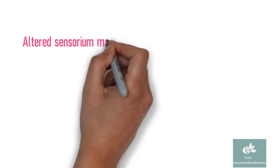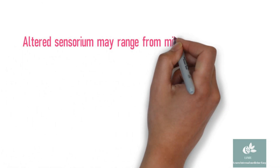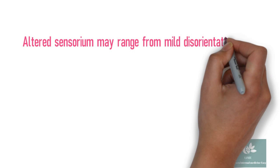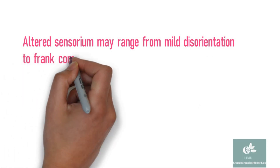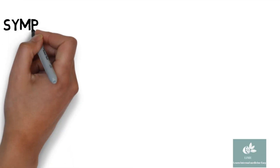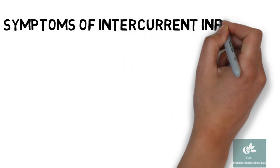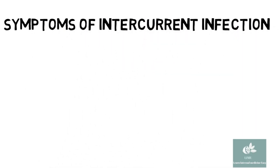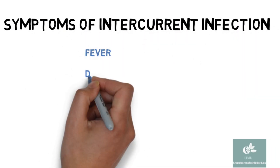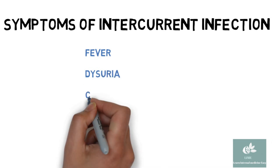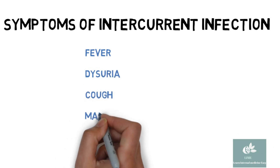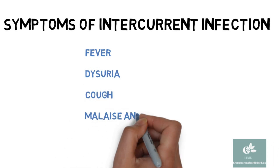Patients also present with altered sensorium, which may range from mild disorientation to frank coma. Patients with DKA may also have symptoms of intercurrent infection, which includes fever, dysuria, cough, myalgia, and arthralgia.